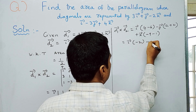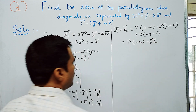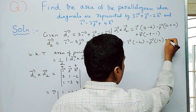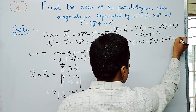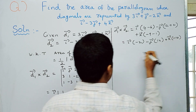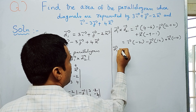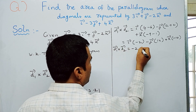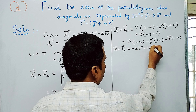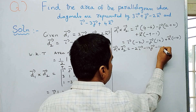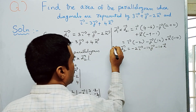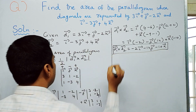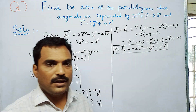So d1̅ × d2̅ = −2i̅ − 14j̅ − 10k̅. This is the result of the cross product of the two diagonal vectors.